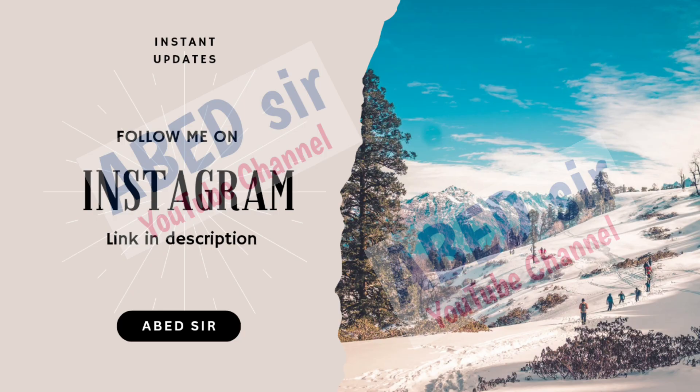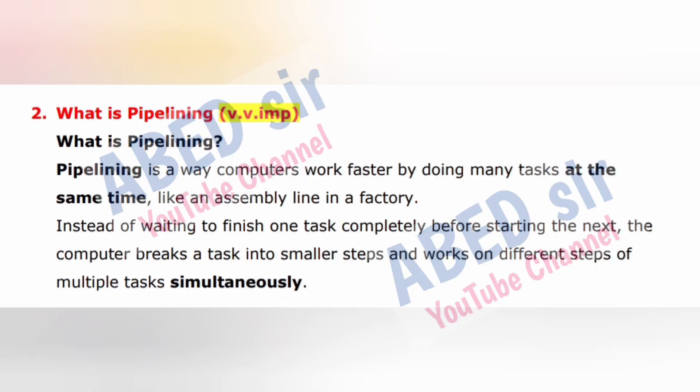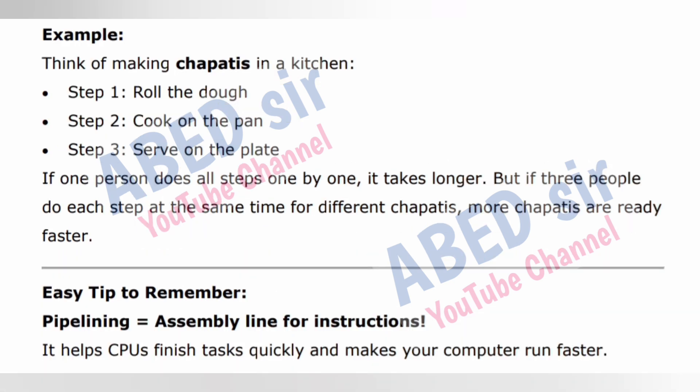Next important short question is 2: What is Pipelining? Pipelining is a way computers work faster by doing many tasks at the same time, like an assembly line in a factory. Instead of waiting to finish one task completely before starting the next, the computer breaks a task into smaller steps and works on different steps of multiple tasks simultaneously. Example: Think of making chapati in a kitchen — Step 1: Roll the dough, Step 2: Cook on the pan, Step 3: Serve on the plate. If one person does all steps one by one, it takes longer. But if three people do each step at the same time for different chapatis, more chapatis are ready faster. Easy tip: Pipelining = assembly line for instructions. It helps CPUs finish tasks quickly and makes your computer run faster.